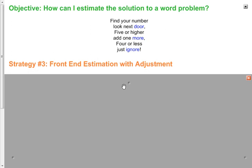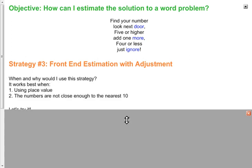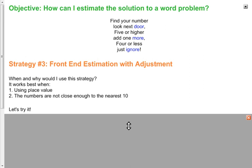Our third strategy is called front end estimation with adjustment. So when do we use this strategy? Well, there's two places where it works best. One is when you are really good and confident with your place value so you can split your tens and your ones quickly and easily and add those together fast. The other is when the numbers are not that close to your nearest ten.